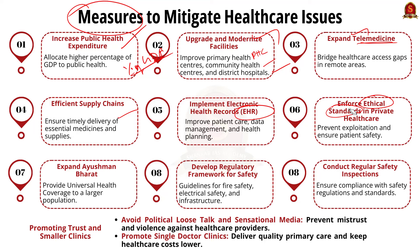Further measures include enforcing strict ethical standards in private healthcare to prevent exploitation and ensure patient safety; expanding schemes like Ayushman Bharat to provide health insurance coverage to a larger section of the population; developing a regulatory framework for private hospitals that includes guidelines for fire safety, electrical safety, and overall infrastructural safety; and conducting regular safety inspections to ensure compliance in private hospitals. Finally, we must refrain from political loose talk and sensational media headlines that increase mistrust of doctors and nursing homes, which can lead to violence against healthcare providers. We must focus on finding and eliminating the root causes of such incidents.